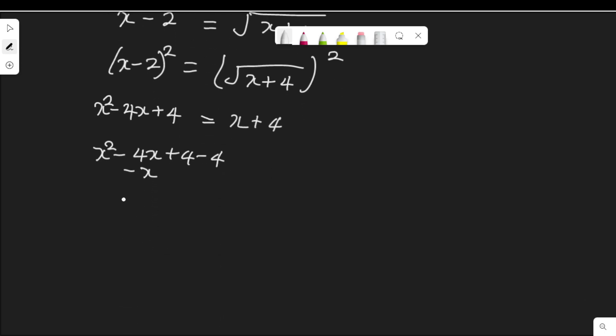So we have x² - 4x - x, 4 - 4 is 0, everything equal to 0. So x² - 5x = 0. x is common, let's factor that.